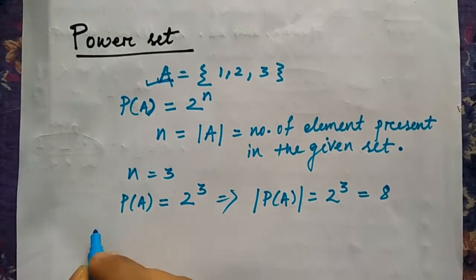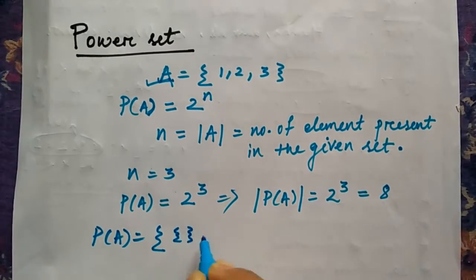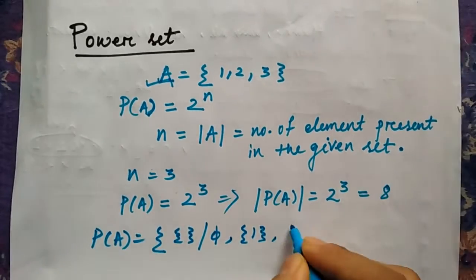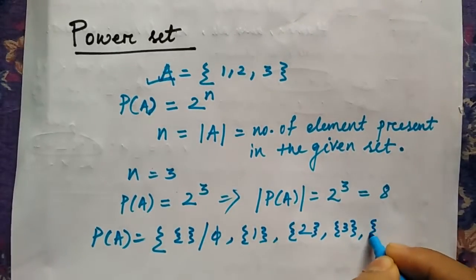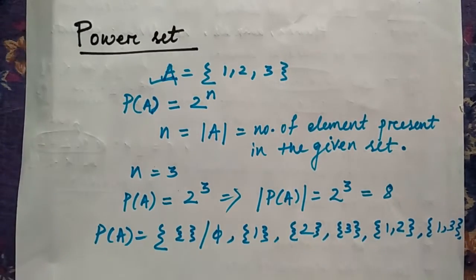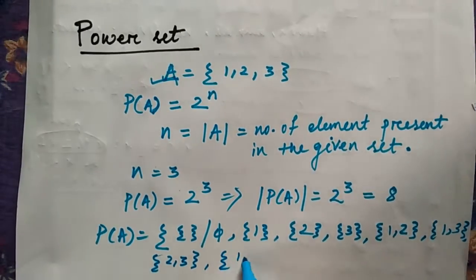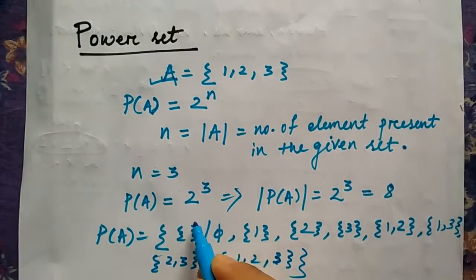If A is {1, 2, 3}, whatever possible sets we can write: first is the empty set, you can write like this, or phi. Second is only {1}, then only {2}, only {3}.